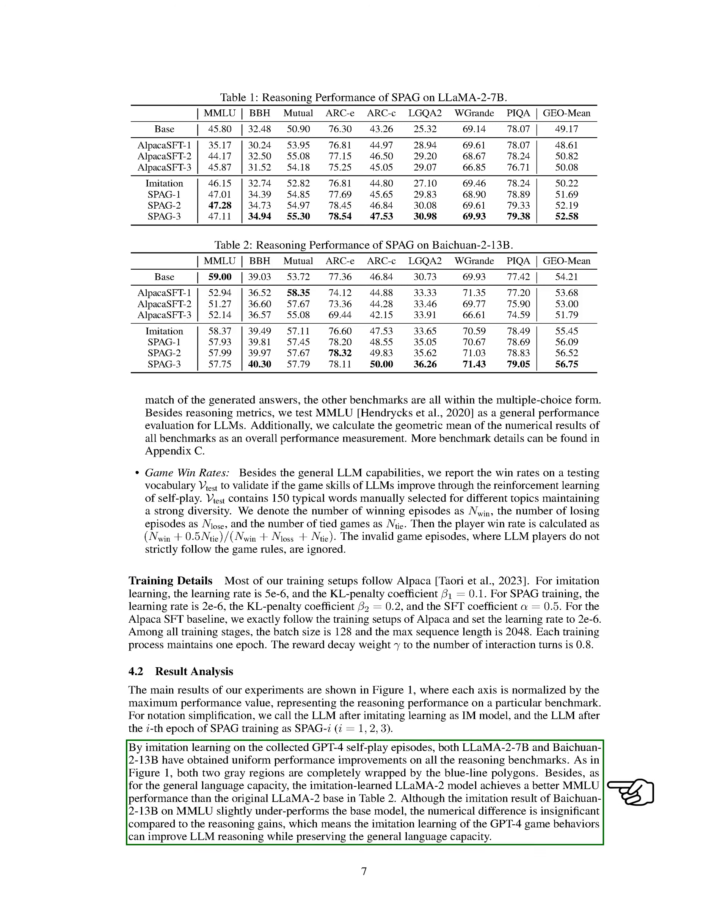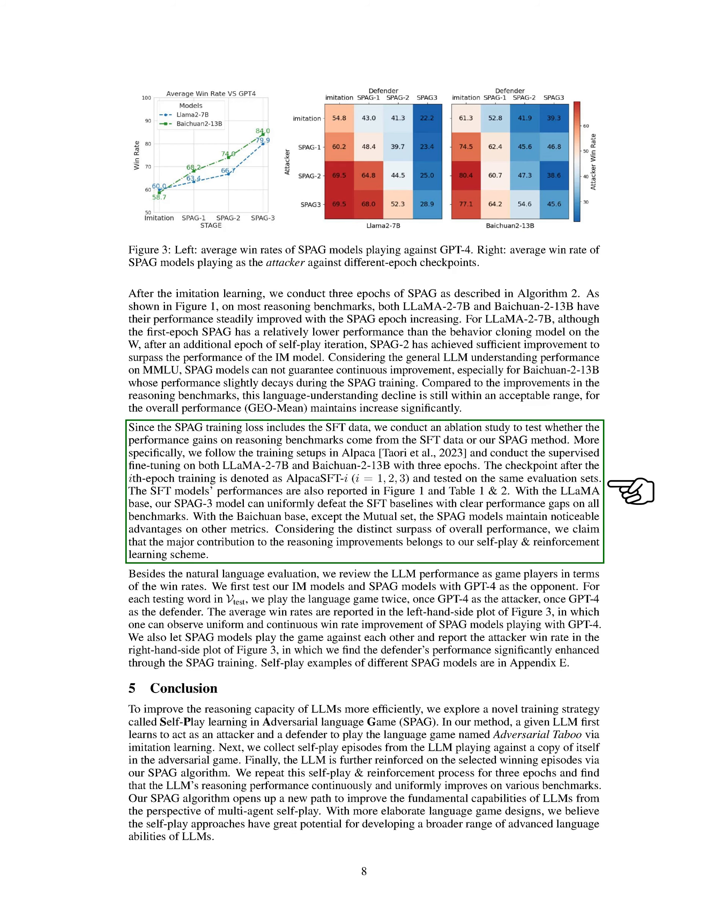The results of our experiments showed improvements in reasoning performance for both LLAMA-2-7B and Bichuan-2-13B after imitation learning and SPAG training epochs. The SPAG models demonstrated enhanced reasoning abilities compared to the baseline models, with consistent improvements in most benchmarks. Furthermore, we conducted an ablation study to determine the impact of the SFT data and SPAG method on reasoning improvements. The results indicated that the self-play and reinforcement learning scheme significantly contributed to the enhancements in reasoning benchmarks.